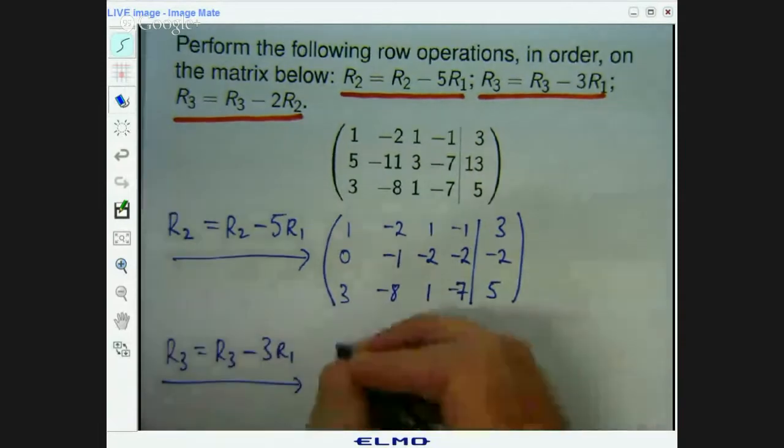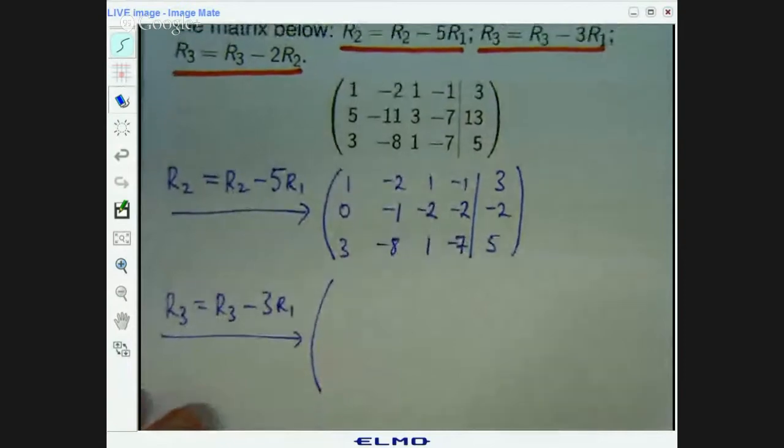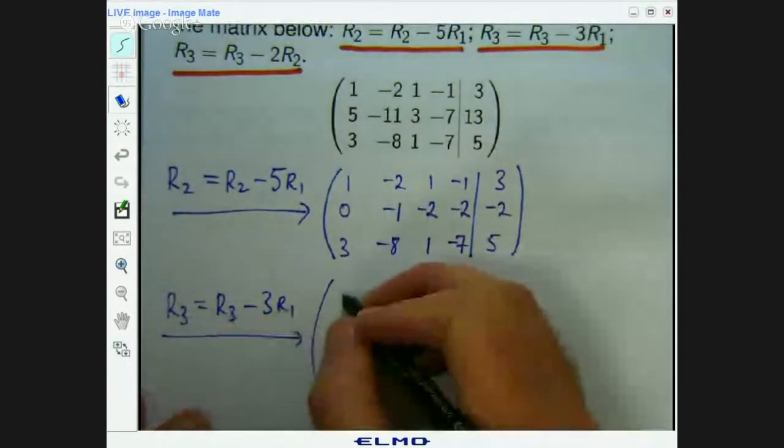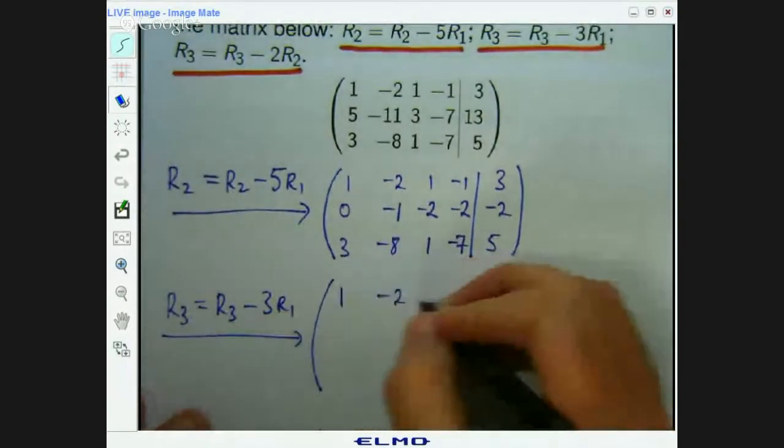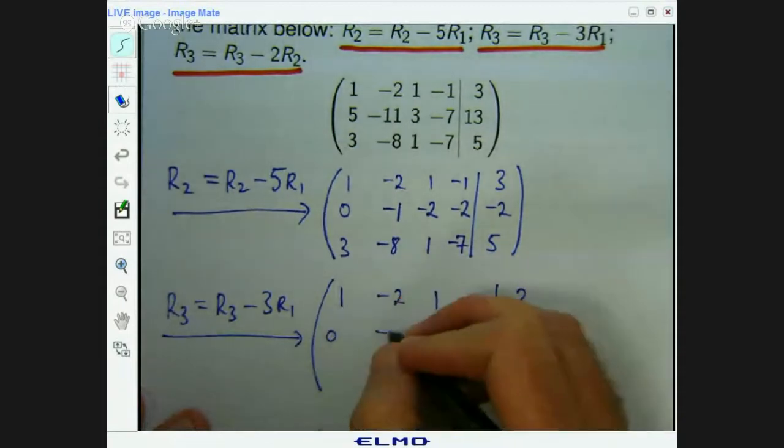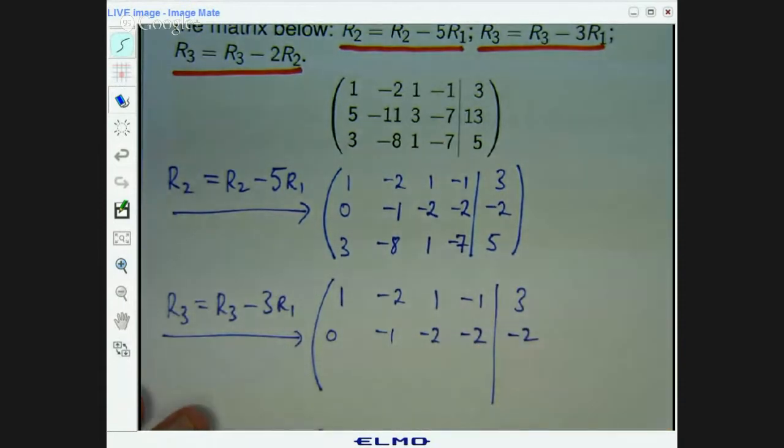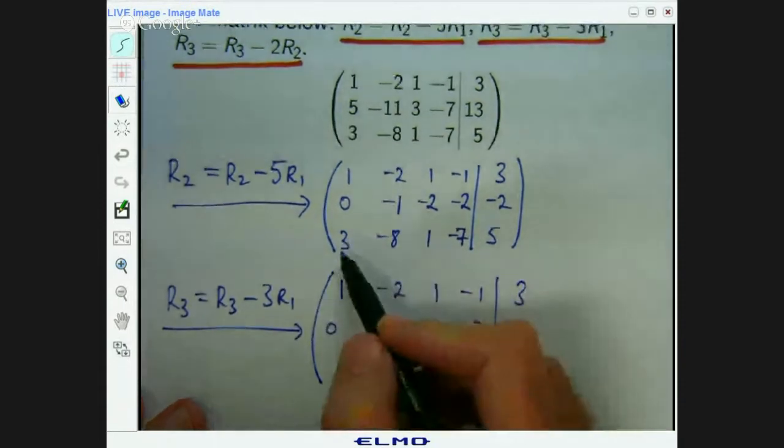And put this long arrow in. And then we have this new matrix. Okay. So the only row that's going to change is row 3. Okay. So row 3 minus 3 times row 1. So that's 3 minus 3 times 1, which is 0.